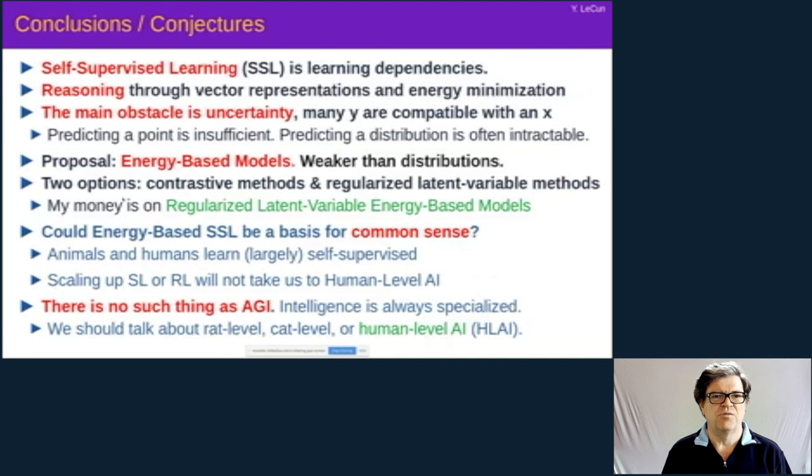OK, conclusions and conjectures. Self-supervised learning is learning dependencies. As I just said, there's a takeaway message. Reasoning through vector representation and energy minimization might be a way to make reasoning compatible with deep learning and with energy-based learning. The main obstacle is dealing with uncertainty in high-dimensional continuous spaces. This is not a problem with NLP and BERT, because we can discretize the space. The space of words is discrete. But it is a problem in high-dimensional continuous spaces like video. So predicting points is insufficient. Predicting a distribution is intractable. So we have to resort to energy-based models. These are weaker than distributions. And we have two options to train those, contrastive methods and regularized latent variable methods. My money is on regularized latent variable energy-based models. I think those eventually will overtake all the other methods. This is not the case at the moment, though.